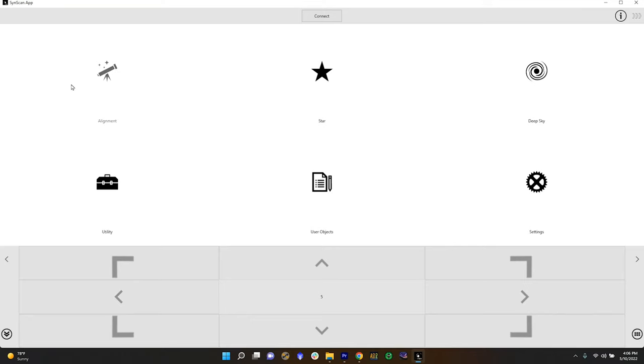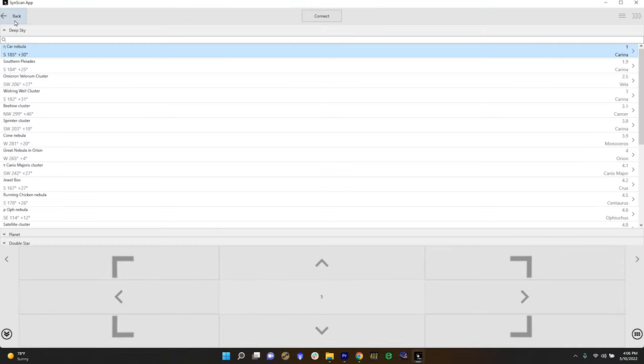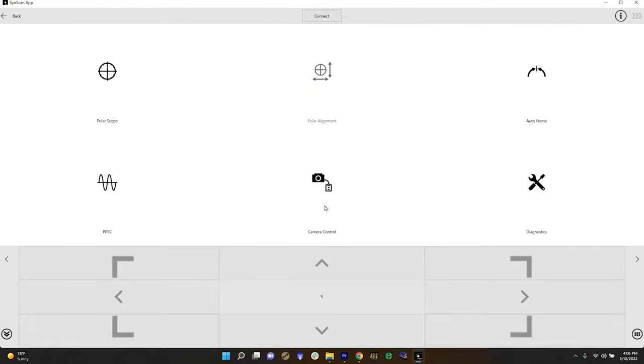So if you don't plan on using a third party software to control your mount the SynScan app is actually really cool. It enables you to do multiple types of star alignments. You can choose separate stars or deep sky objects that you would like to view. You can also do a deep sky tour under tonight's best. You can identify targets. You can do PPC. You have camera control and other diagnostics. It is a very well thought out app but in this situation I'm only going to be using this app to connect my mount. I'm going to be using Sequence Generator Pro to run all of my tests.